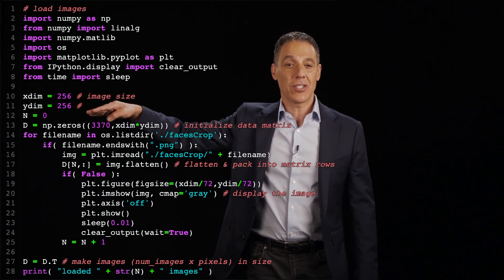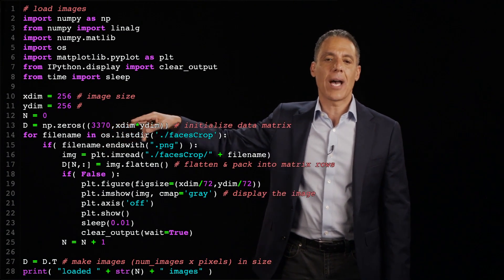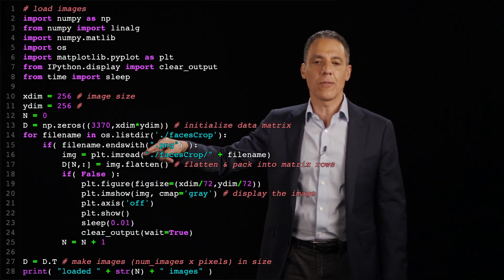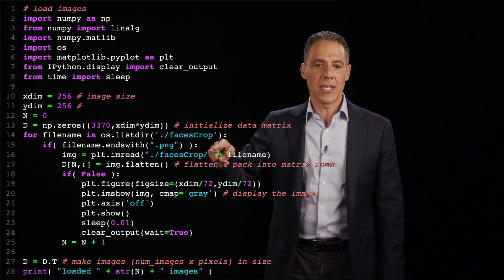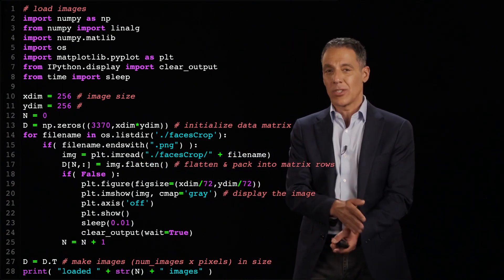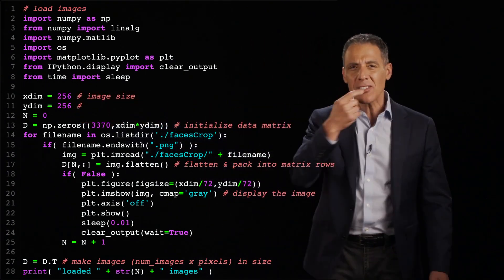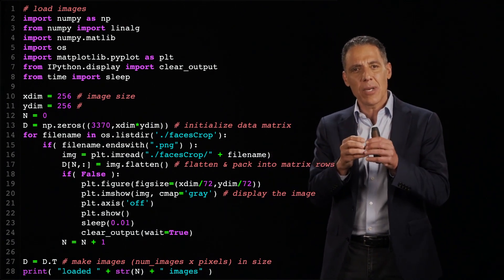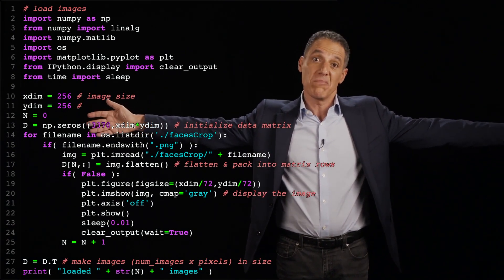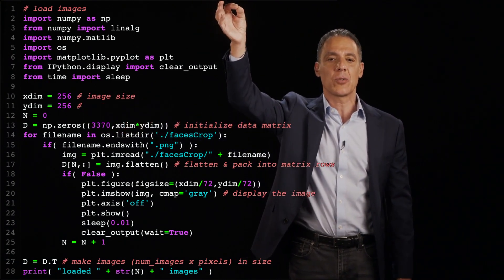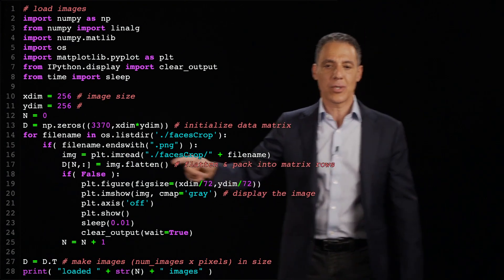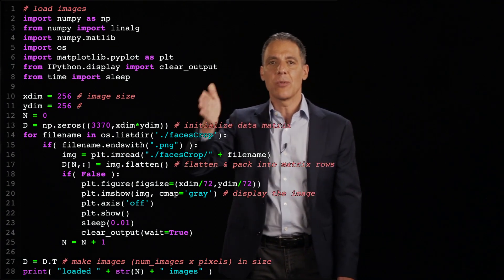All the images I'm going to bring in are 256 by 256. And I have a total of 3,000 some odd images stored in a directory here called faces crop. So this little for loop right here is going to load in all of those images. So here you can see I'm loading in the image from the directory. I'm going to flatten that image. So remember again that we need to pack our data, which is some point in a 256 squared space. And so we're going to flatten the image and we're going to put it into the column of the data matrix D. And then we're going to have each column be associated with a different face.